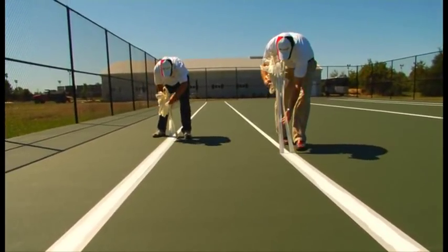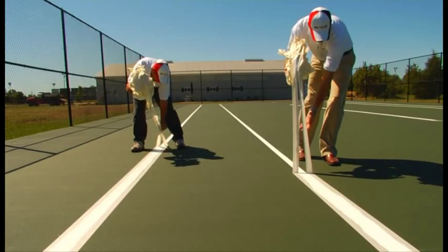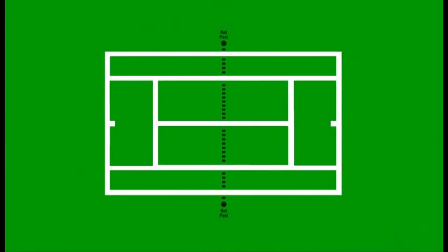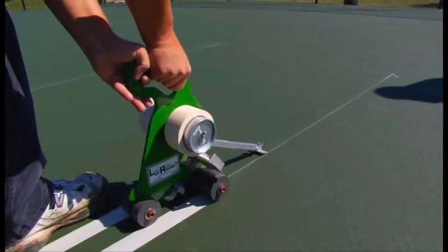After the tape is removed and the line paint is completely dry, we're ready to measure and tape the short lines. There will be four more lines, two baselines and two service lines. The baselines can be up to four inches in width from the outside of the playing box area. Roll out the masking tape and box off the ends to prepare for painting.